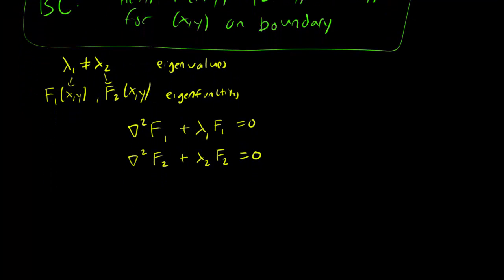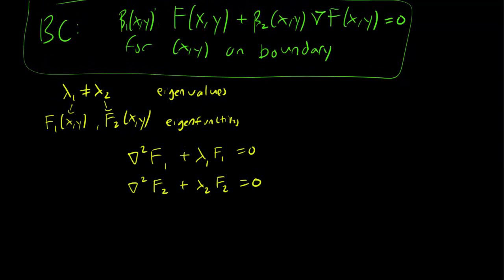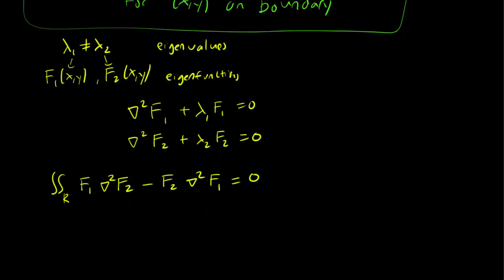Let's use the self-adjointness. Because we have the boundary conditions, we know that the Laplacian is self-adjoint, and self-adjoint refers to the product that includes the double integral over the region. We know that the integral of F1 Laplacian of F2 minus F2 Laplacian of F1 equals 0. Since we have the equations, we can rewrite the Laplacians. Laplacian of F2 equals minus lambda2 F2, and Laplacian of F1 equals minus lambda1 F1.